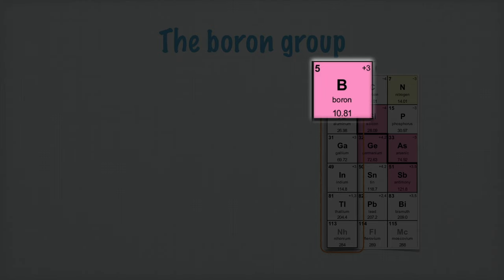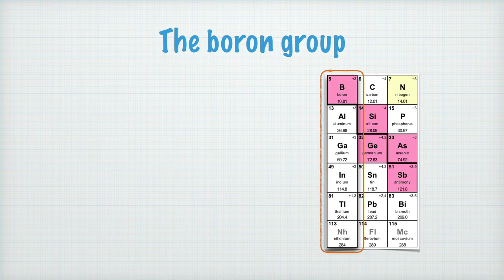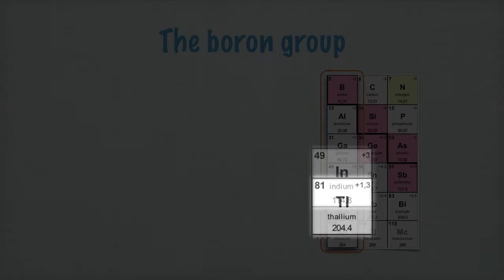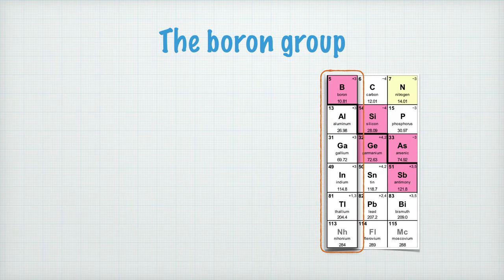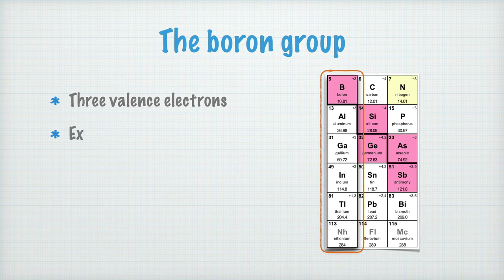Let's start with the elements in the boron group. First there's boron, with atomic number 5. It's a metalloid, which means it has some metal characteristics, but not all. The rest of the elements in the boron group - aluminum, gallium, indium, thallium and nihonium - are metals. The elements in group 13 have three valence electrons.